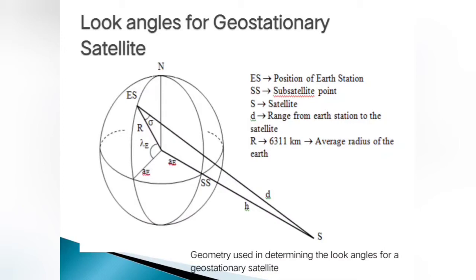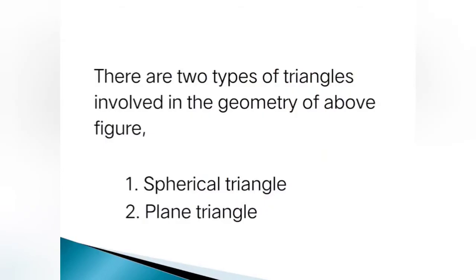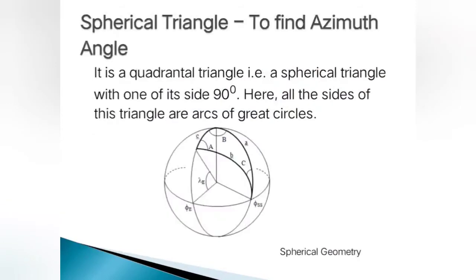To determine the look angles for a geostationary satellite, we consider this geometry. There are two types of triangles involved: the first is the spherical triangle, which is used to find out the azimuth angle, and the second is the plane triangle, which is considered for finding the elevation angle.